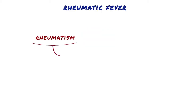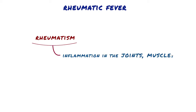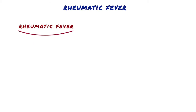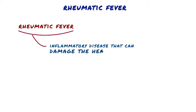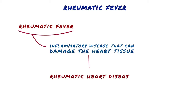Rheumatism is used to describe any disease marked by inflammation in the joints, muscles, or fibrous tissue. Rheumatic fever is a type of inflammatory disease that can damage the heart tissue and lead to rheumatic heart disease.